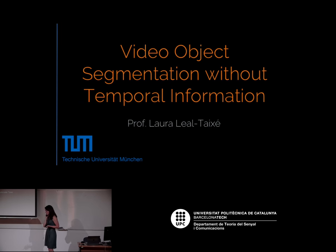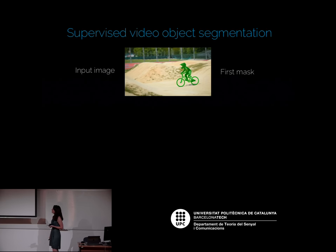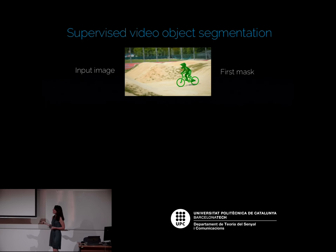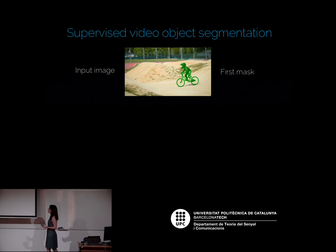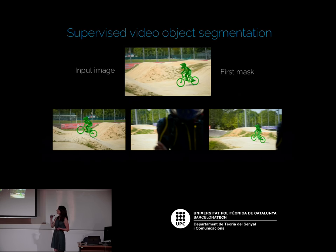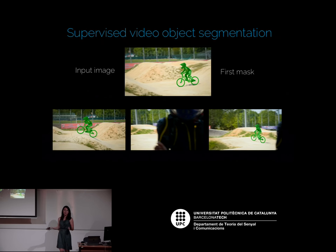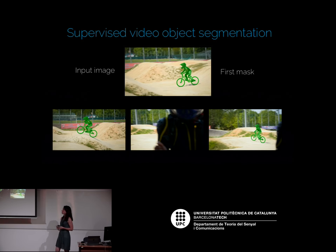In particular, I want to explain how one can perform video object segmentation without temporal information, which seems counterintuitive, but actually works surprisingly well. For this task, we focus on supervised video object segmentation. We have the first image of our video with the ground truth mask of the object we want to follow. We know its appearance and shape from this first mask. Our task is to follow this object through the video. This is easy in early frames but gets harder when the object is fully or partially occluded, or changes appearance.